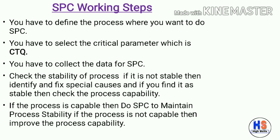There are some steps we need to follow to do SPC. First, define the process where you want to do SPC. Second, select the critical parameter which is CTQ — Critical to Quality. Third, collect the data for SPC. Fourth, check the stability of the process. If it is not stable, identify and fix special causes.